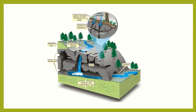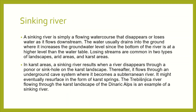Now we are going to learn about the sinking river. A sinking river is a flowing water course that disappears or loses water as it flows downstream. The water usually drains into the ground, increasing the groundwater level, since the bottom of the river is at a higher level than the water table. Losing streams are common in arid areas and karst areas. In karst areas, a sinking river results when a river disappears through the karst landscape, flows through an underground cave system becoming a subterranean river, and might eventually resurface in the form of a karst spring.